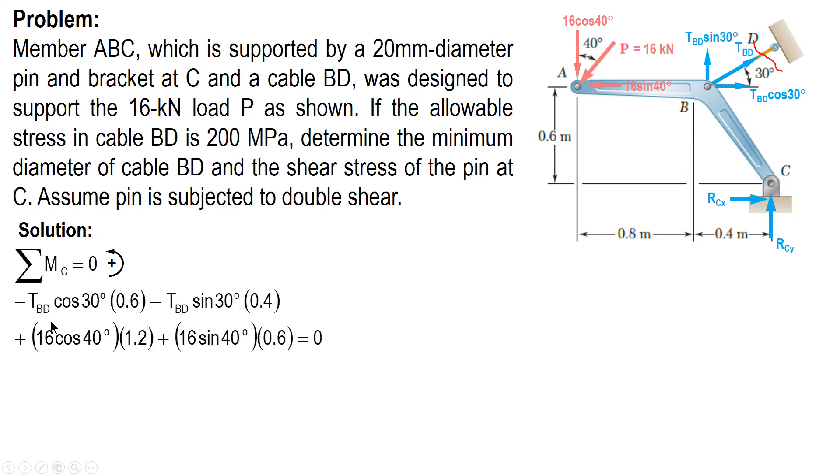We have this one. This force times 0.6, and sine 30 times 0.4, 16 cosine 40 times 1.2, and 16 sine 40 times 0.6. So solving this equation gives you tension BD equal to 29.014 kilonewtons.